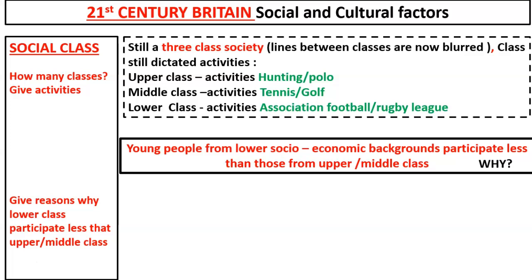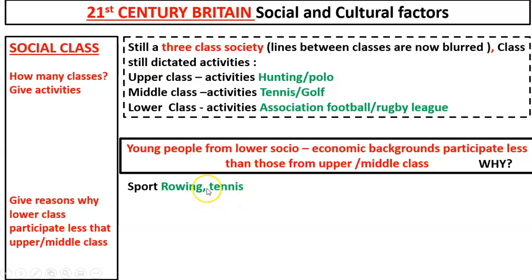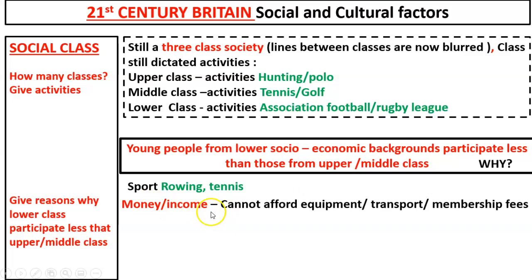To understand why lower class people participate less, let's consider two sporting examples: rowing and tennis. If you wanted to take part in rowing or tennis and you were from a low socioeconomic background, the first barrier is money or income. You cannot afford equipment, transport, or membership fees. For example, you might not be able to afford a tennis racket or transport to get to the courts.